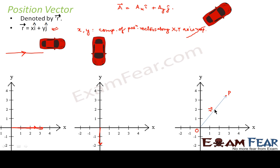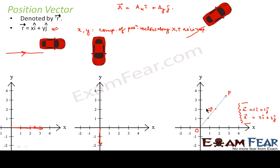So r represents the position vector of the car. At any point on the path, the vector has both an x component and a y component. For example, at one point the x component is 1 and the y component is 1, so r equals 1 i-cap plus 1 j-cap. At another point, r would be 2 i-cap plus 2 j-cap. I am just trying to explain this expression and relate it to the graph so the basic concept of position vector is clear.